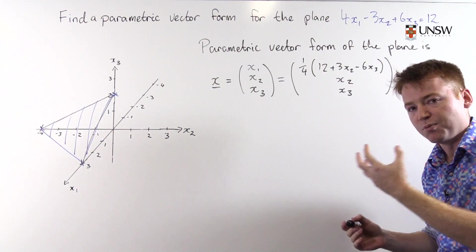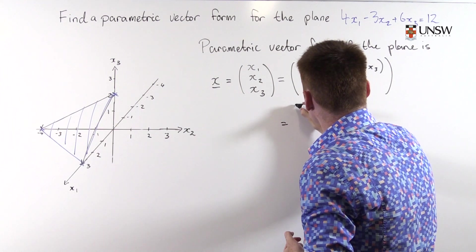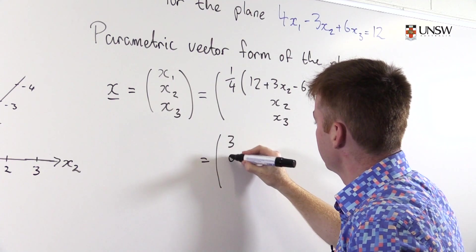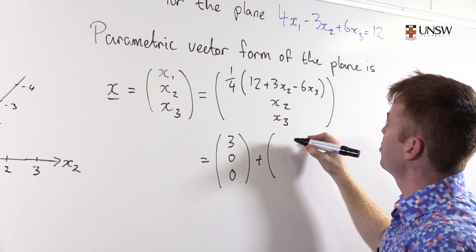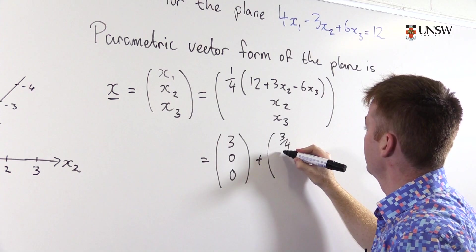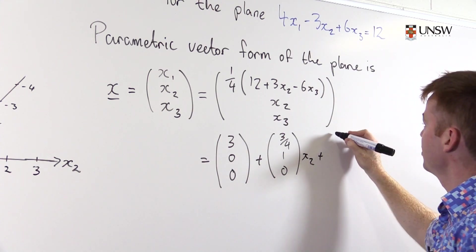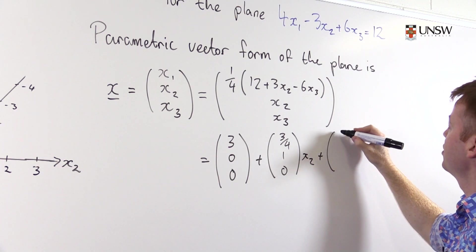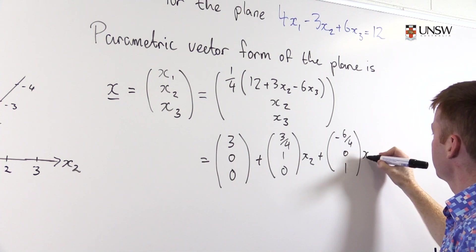These degrees of freedom will become our λs and our μs. So we'll let this be equal to (3, 0, 0) plus, let's get our x₂'s together. So that's (3/4, 1, 0)x₂ plus (-6/4, 0, 1)x₃.